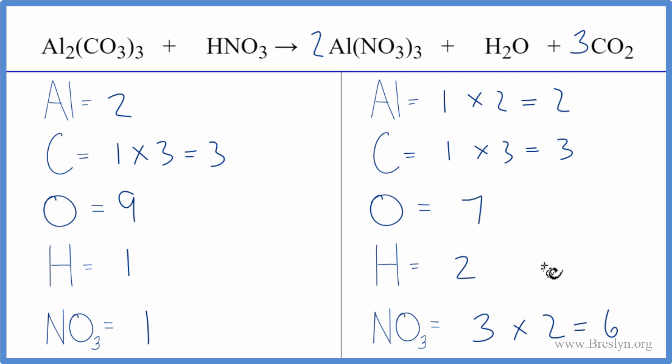It seems like it would be fairly easy to put a two in front of the HNO3. Now one times two. That would give me two hydrogen atoms. Those would be balanced. And then the one nitrate times the two. So now I have a bit of a problem. The oxygen has seven and nine. That's not easy to work with.